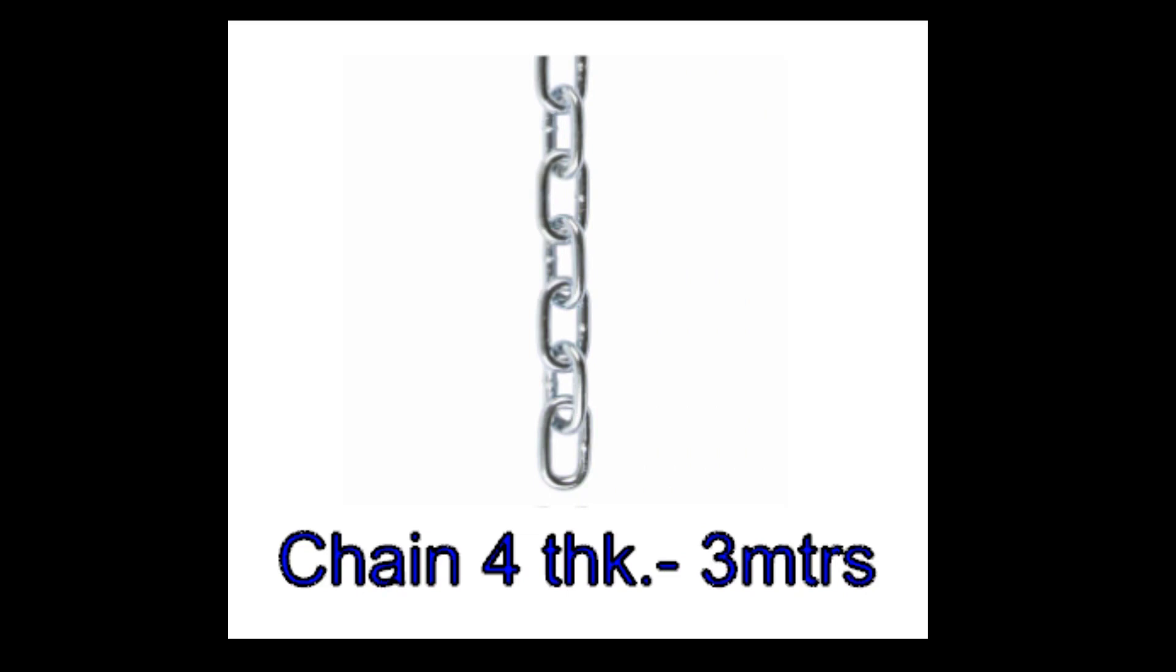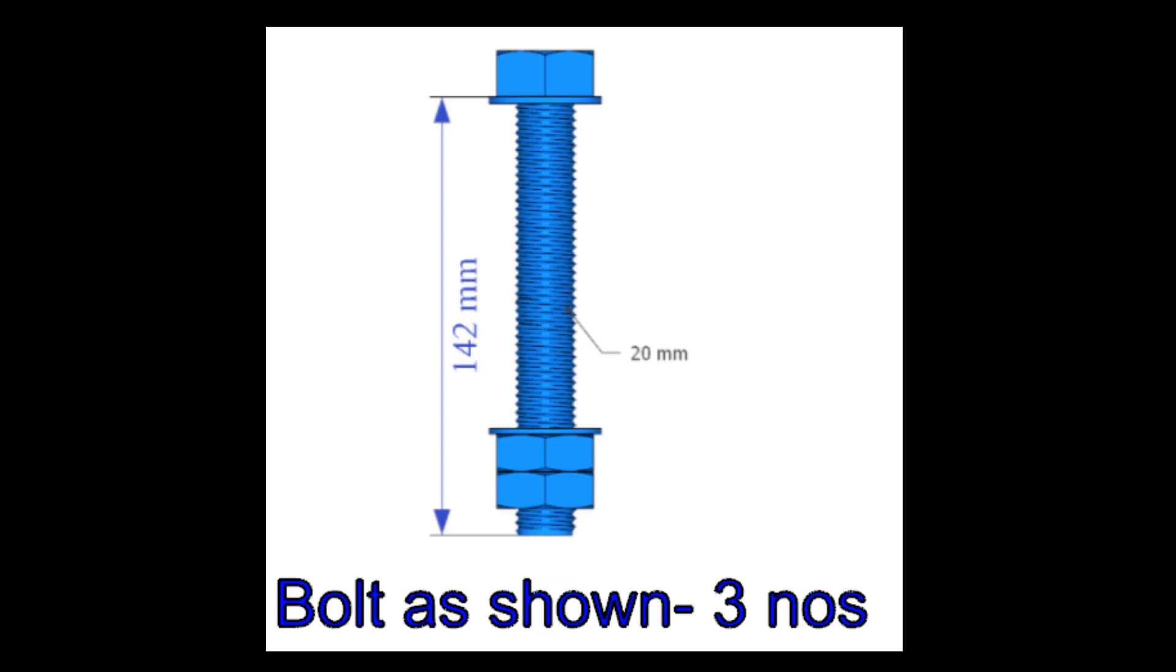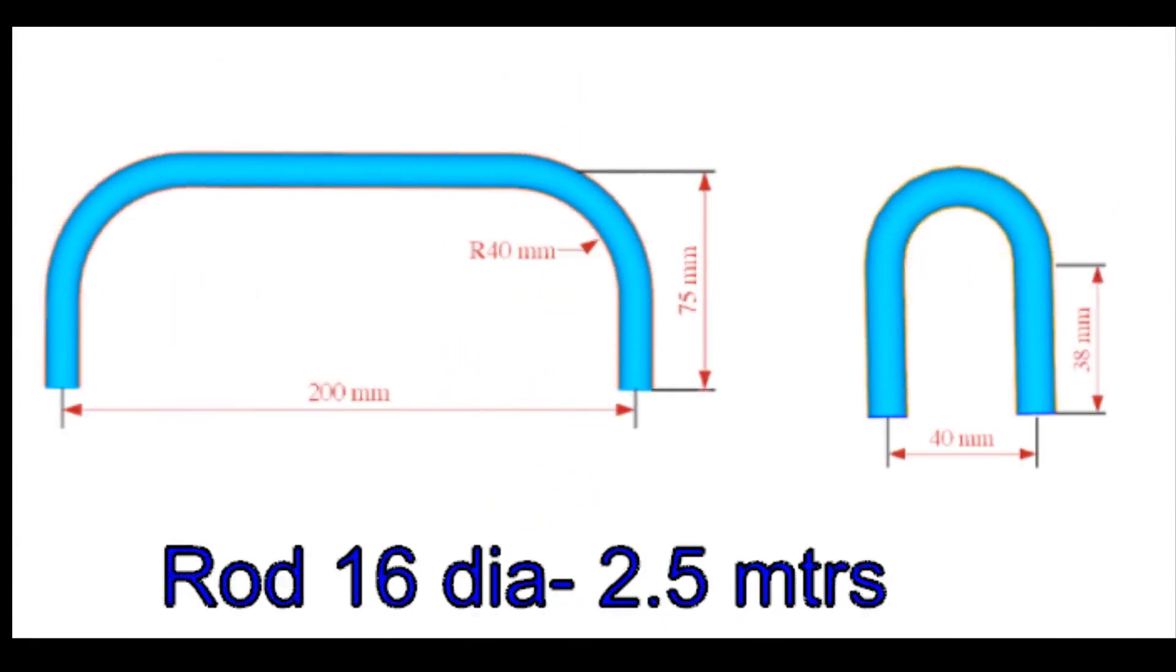3 mm thick chain, 3 meters. 20 mm diameter bolts, 3 numbers as shown. 16 mm diameter rod for 6 numbers handles and 3 numbers hooks.